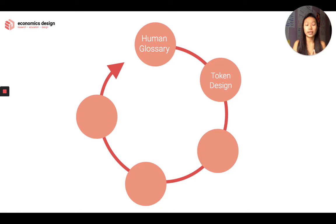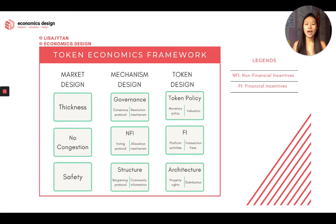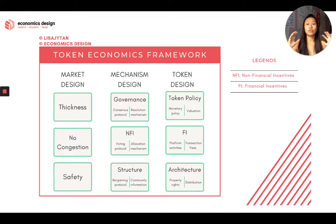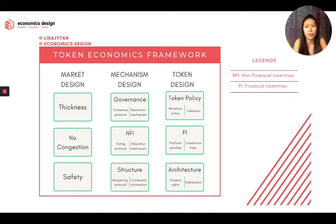Now we're going to dive deeper into understanding token design. We have talked about the token economics framework. We talked about market design, which is the design of the environment. When we have participants coming together to interact, we need to design this environment so that they feel safe to interact and you don't want them to be transacting off-chain — then what's the point of your ecosystem anyway? We talked about mechanism design: they are part of incentive mechanisms and they are rules of the game. How do you govern people's actions? How do you govern people's interactions?